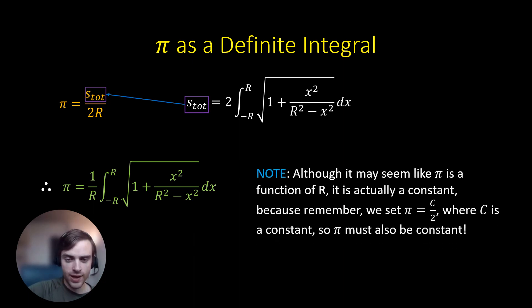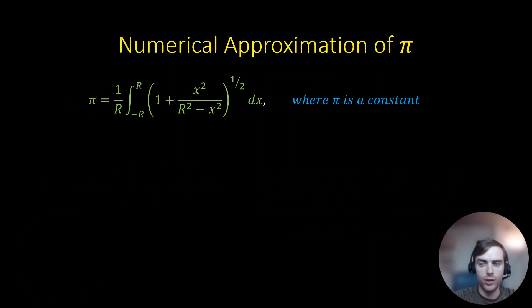So note that although it may seem like pi is a function of r, it is actually a constant. Because remember, we set pi equal to c over 2, where c is a constant. And therefore, pi must also be a constant. So it is pretty strange that it's in terms of r, but it's actually a constant.